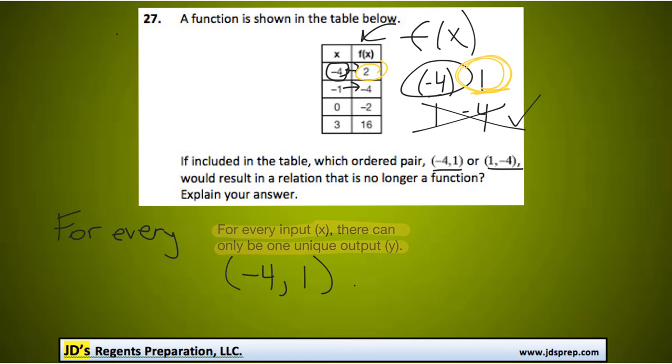And one explanation you could give for that is because f of negative 4 would give two different values.